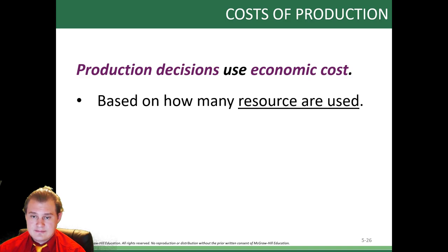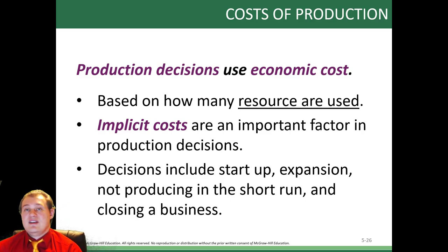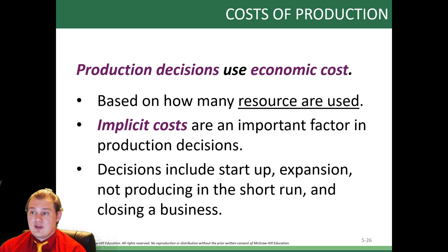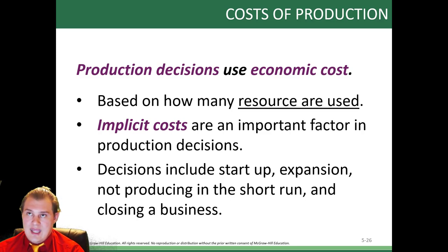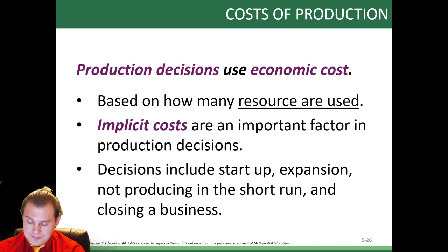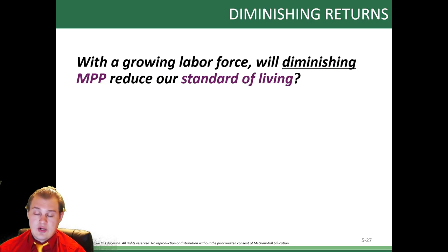Production decisions use economic cost. They're going to look at how resources are used. Decisions include startup, expansion, not producing in the short run, and closing the business. Some businesses run negative at first, especially tech companies — a lot of times they're looking at customer acquisition, like Facebook and Google. Another example is MoviePass: they're running very negative, charging only $10 a month for one movie per day at any theater. They're trying to capture all the customers, then leverage that to talk with theaters about discount tickets and cut into profits.